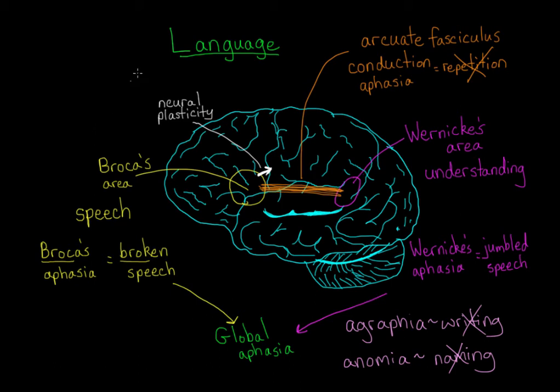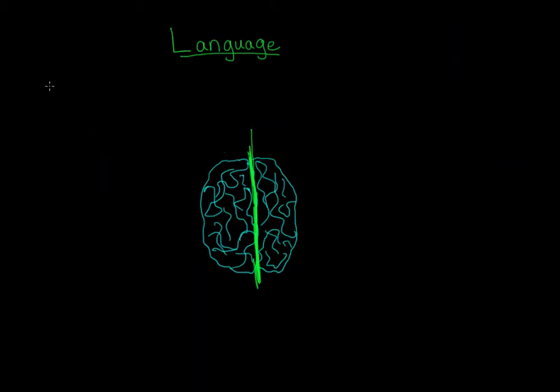Even with perfectly functioning hemispheres, you might still have trouble naming objects. This can happen if communication between the hemispheres is disrupted by severing the corpus callosum, which is a thick band of nerve fibers that connects your brain's two hemispheres. This creates what's called a split brain patient, because your brain is now split into two parts. People used to have to do this sometimes as a treatment for seizures, but in addition to helping with that problem, this surgery creates some pretty interesting side effects in terms of language.